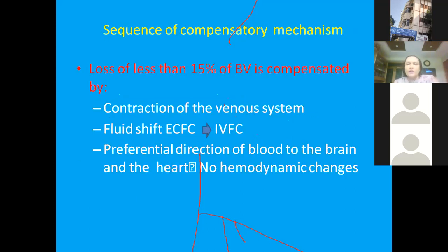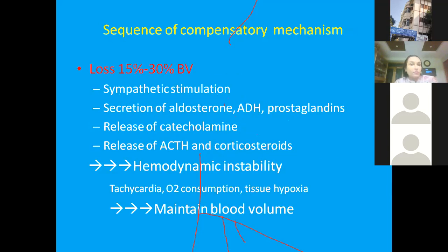In the sequence of compensatory mechanisms, loss of less than 15% of blood volume is compensated by contraction of the venous system, fluid shift from extracellular to intravascular space, and preferential blood flow to the brain and heart — with no hemodynamic changes. But when blood loss reaches 15–30% of blood volume, there is sympathetic stimulation, tachycardia, decreased oxygen saturation, tissue hypoxia, and hemodynamic instability requiring intervention.